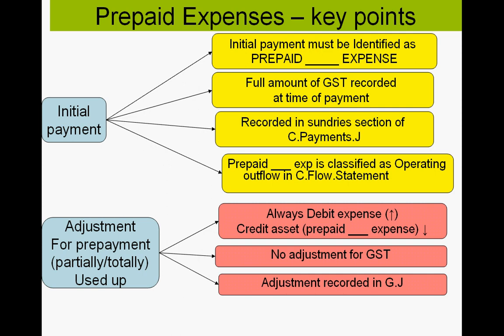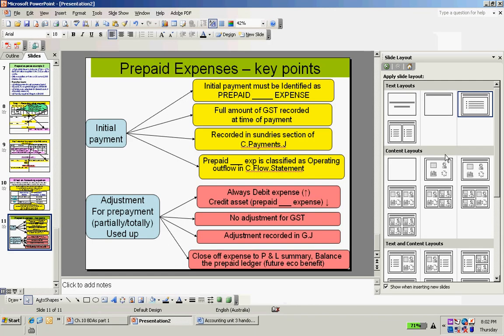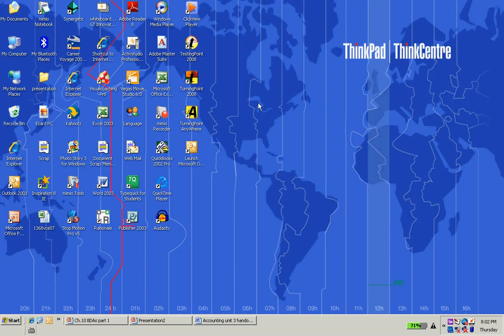The adjustment is recorded in the general journal because a balance day adjustment is a transaction not catered for by the four special journals, and any entry to the general ledger must be journalised first. Finally, in the general ledger we close off the expense account to the P&L summary to calculate profit and zero off the expense account for the next period, and we balance off the asset account as there may be a remaining benefit carrying over into the next reporting period.